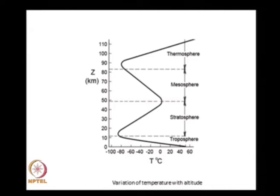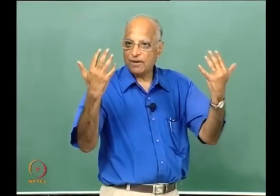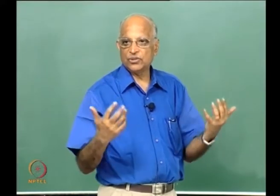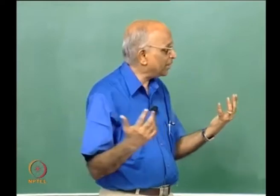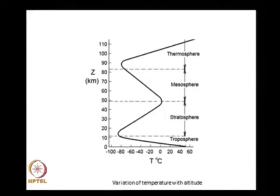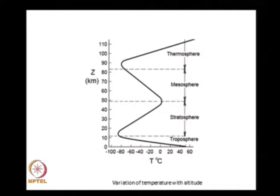Is there any confusion about why the temperature decreases above the surface of the earth? The place where an aircraft flies is around 8 to 10 kilometers, where the temperature is around minus 45 to minus 50 degrees centigrade. Then you have the stratosphere and mesosphere where the temperature again increases due to ozone, and mesosphere has not much gas. In the thermosphere we have no continuum — individual atoms and molecules react to liberate heat — a molecular region.